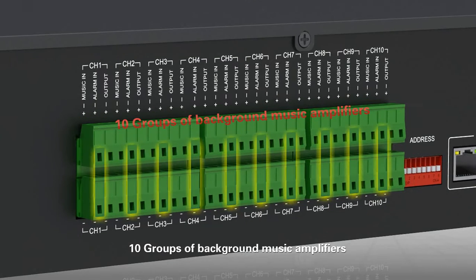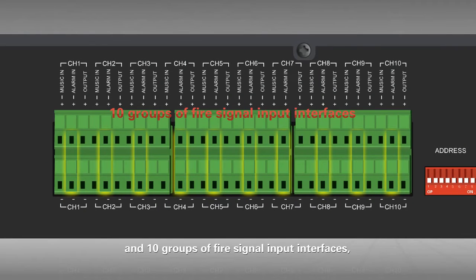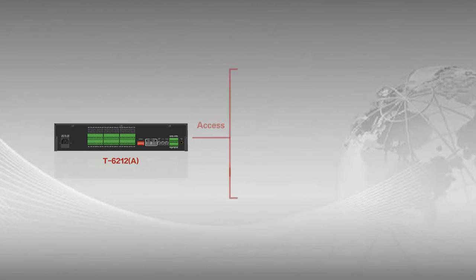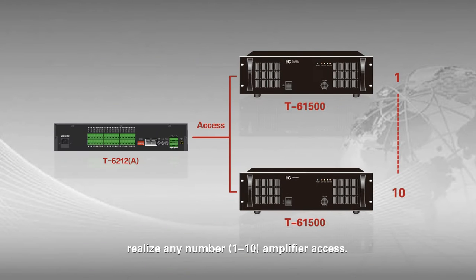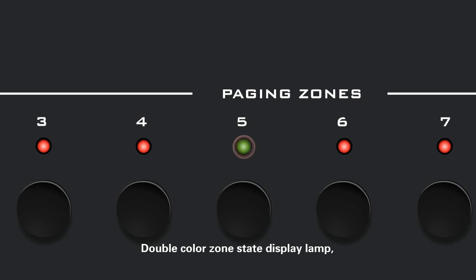10 groups of background music amplifiers and 10 groups of fire signal input interfaces. 10 groups of signal output interfaces. Realize any number 1 to 10 amplifier axis with double color zoom state display line.